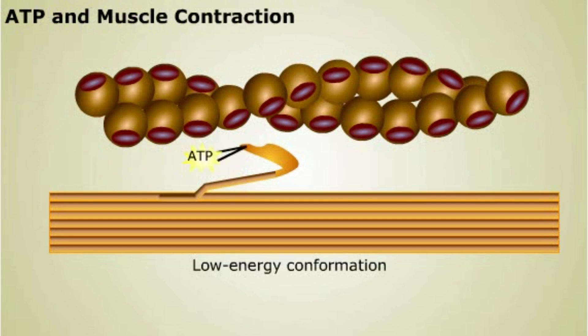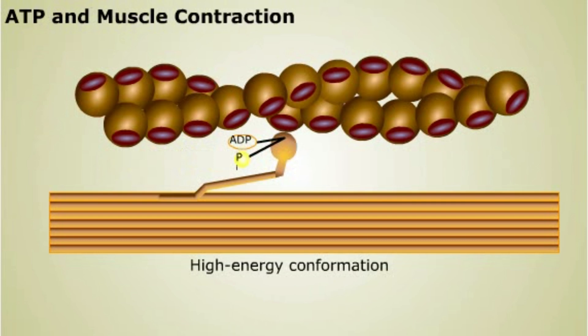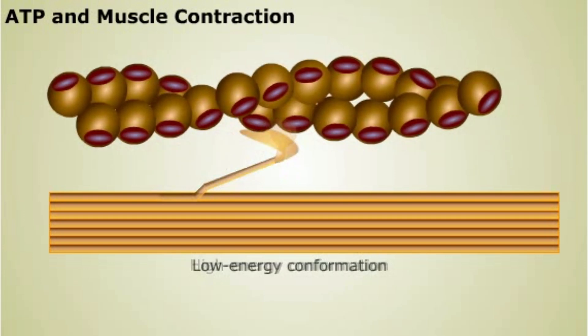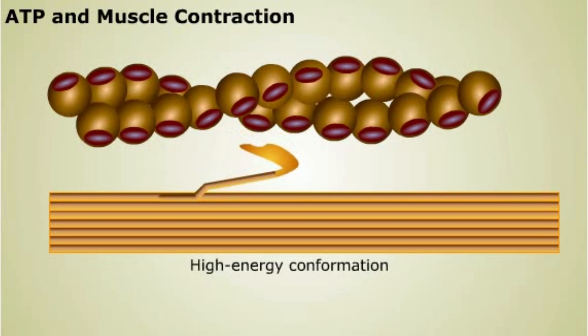ATP binding and hydrolysis change the shape of the myosin head on the thick filament. The high-energy conformation binds to the thin filament actin. When the energy is released, the myosin head changes shape to the low-energy conformation. The change in shape pulls the thin filament toward the center of the sarcomere.